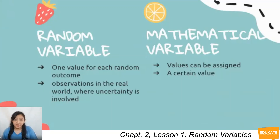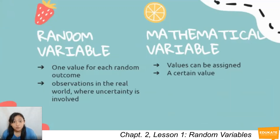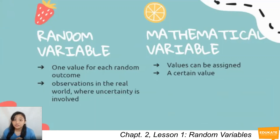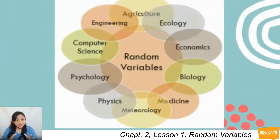To formally compare, you have random variables and mathematical variables. Random variables have exactly one value for each random outcome, and observations are linked to the real world where uncertainty is involved. But for mathematical variables, your values can be assigned and have a certain value.